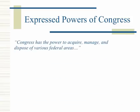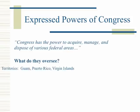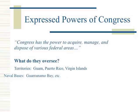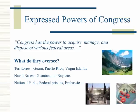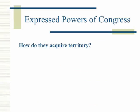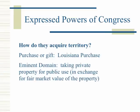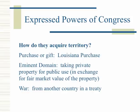Congress has the power to acquire, manage, and dispose of various federal areas, including territories such as Guam, Puerto Rico, and the Virgin Islands; naval bases such as Guantanamo Bay; national parks; federal prisons; and embassies. How do they acquire territory? Through purchase or gift — an example would be the Louisiana Purchase — eminent domain, which is taking private property for public use in exchange for fair market value, or through war from another country in a treaty.